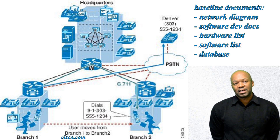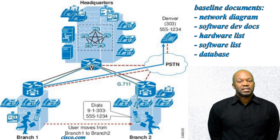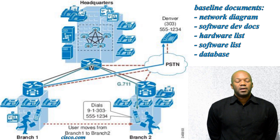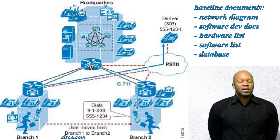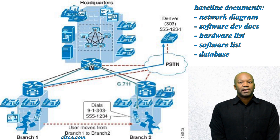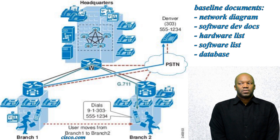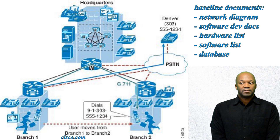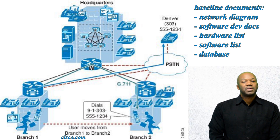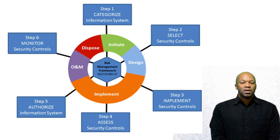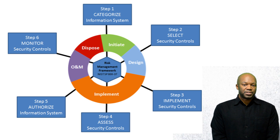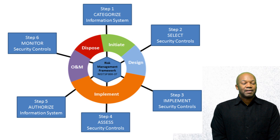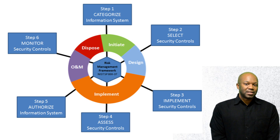And if anything changes in that baseline — if the network changes, if there are significant additions to the software or hardware or anything like that — then it always has to be documented. Otherwise you don't know what's going on with your system. If something changes, you don't even know when it got there; you can't track the lifecycle of your network or your system. So if you really have no baseline and no documentation, you really don't have any security.